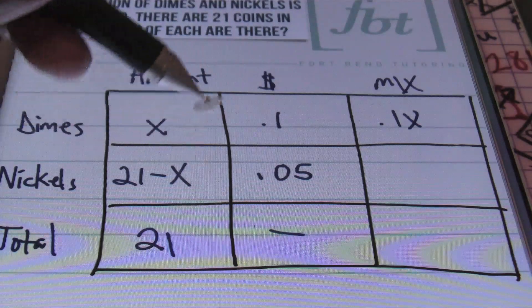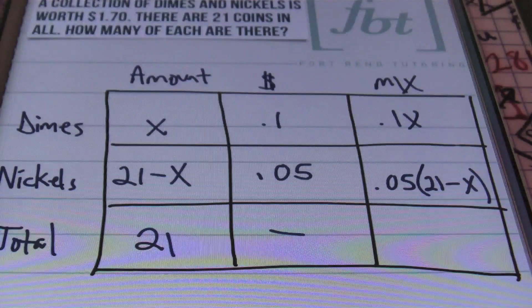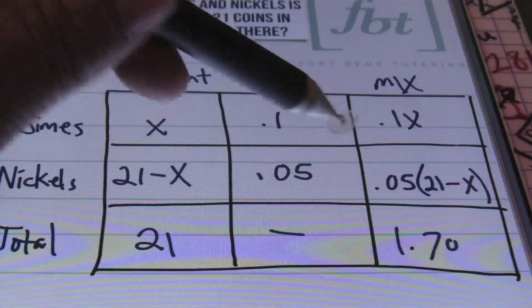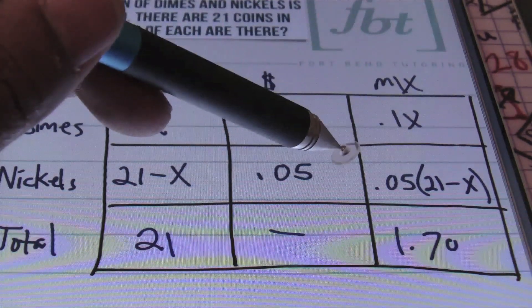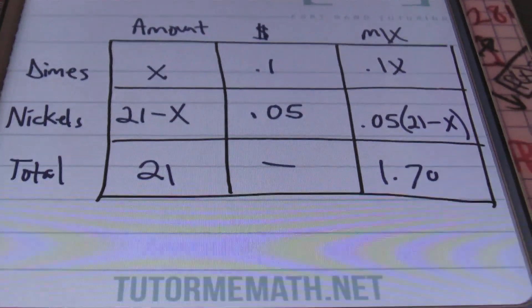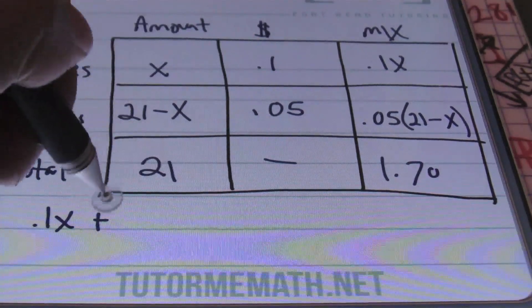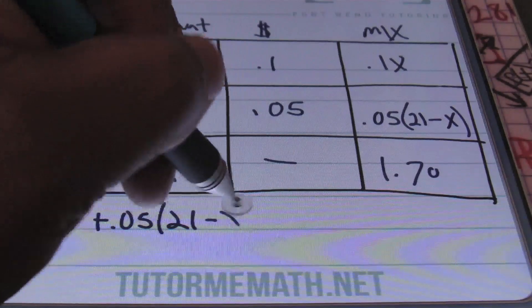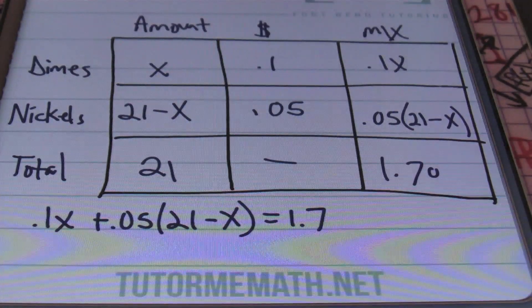To find the third column — the final mix — we multiply the first column times the second column. X times one-tenth gives me one-tenth X. Multiplying 21 minus X times five-hundredths gives five-hundredths times (21 minus X). The total amount of the mix is $1.70, which I'll write as one and seven-tenths. It is this last column that defines the equation: one-tenth X plus five-hundredths times (21 minus X) equals one and seven-tenths.